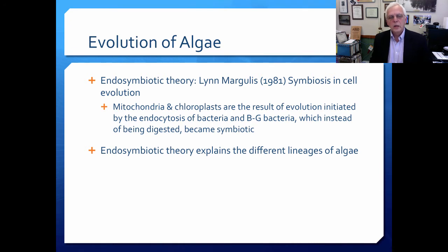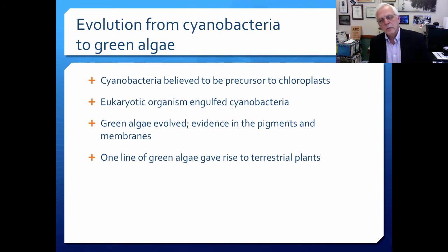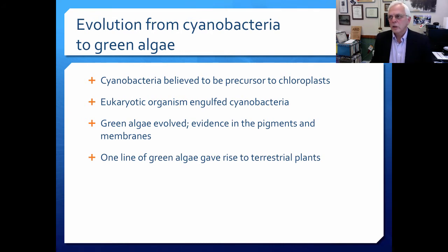Bacteria and blue-green algae were engulfed by other cells which, instead of being digested, became symbiotic and could offer different kinds of services to those cells. The endosymbiotic theory explains the different lineages of algae. In the evolution from cyanobacteria to green algae, it's believed that the cyanobacteria were the precursors to the chloroplasts, and then eukaryotic organisms may have engulfed the cyanobacteria or the cyanobacteria became endosymbiotic. The green algae evolved, and the evidence for this is in the pigments and membrane structure of the green algae.